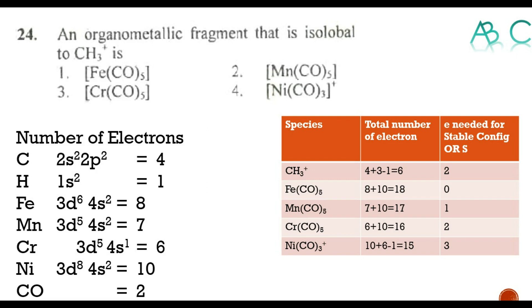Check which of these have same number of electrons. CH3+ and Cr(CO)5 both have same number of electrons, both needing 2. Thus the answer is option 3, chromium pentacarbonyl.